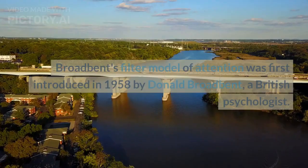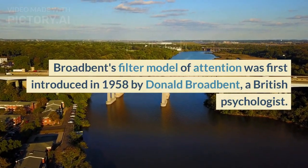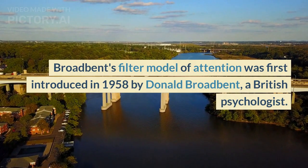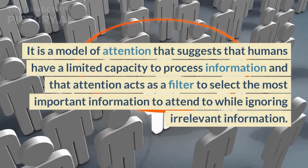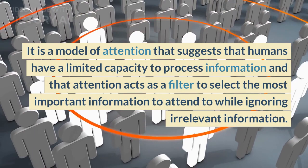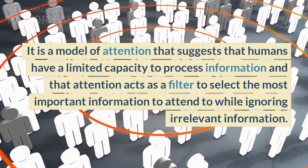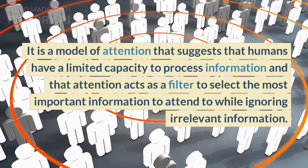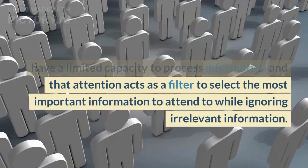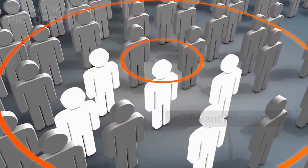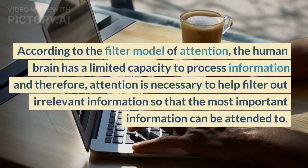Broadbent's filter model of attention was first introduced in 1958 by Donald Broadbent, a British psychologist. It is a model of attention that suggests that humans have a limited capacity to process information, and that attention acts as a filter to select the most important information to attend to while ignoring irrelevant information.